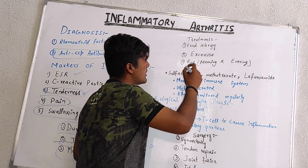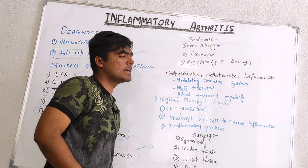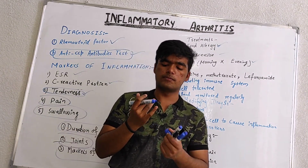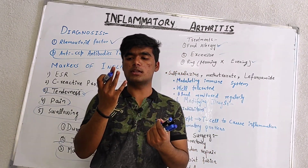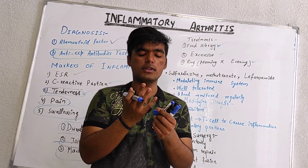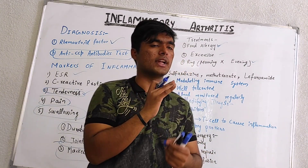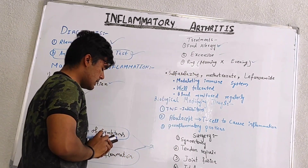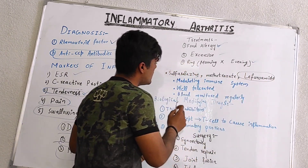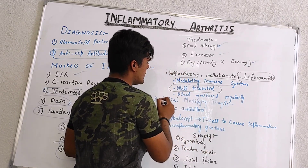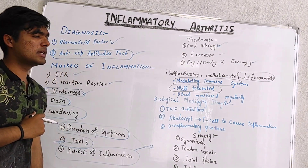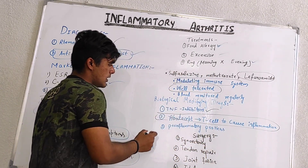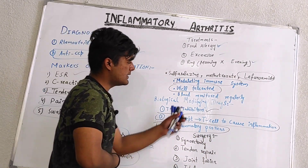Before making a treatment plan, we check food allergy — whether the patient is allergic to some food agents — and exercise. We can also check by asking if a person wears a ring: in the morning their joints are swollen and they cannot wear the ring, but in the evening the joint moves towards a normal position and they can wear it. Drugs include sulfasalazine, methotrexate, and leflunomide. These modulate the immune system and require regular blood monitoring. We also have biological modifying drugs, TNF inhibitors, and abatacept, which affects T-cell-driven inflammation and pro-inflammatory proteins.